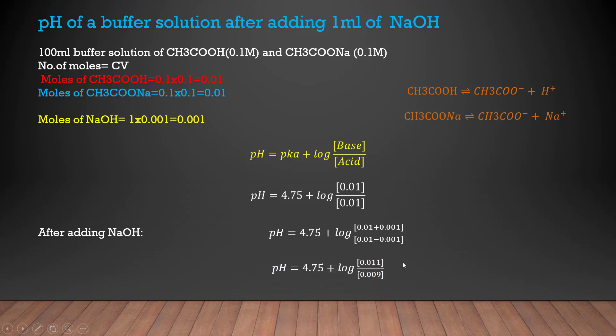After doing the necessary arithmetic calculation we get right over here it's log 1.2. After taking the log we get 0.08 and lastly the pH comes out to be 4.83.